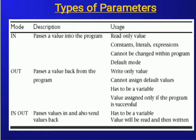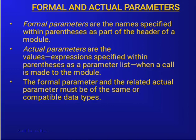The types of parameters by mode are: IN — passes a value into the program; OUT — passes the value back from the program; IN OUT — passes a value in and also sends values back. Formal parameters are the names specified within parentheses as part of the header of the module. Actual parameters are the values or expressions specified within parentheses as a parameter list when a call is made to the module. Formal parameters and the related actual parameters must be of the same or compatible data types.